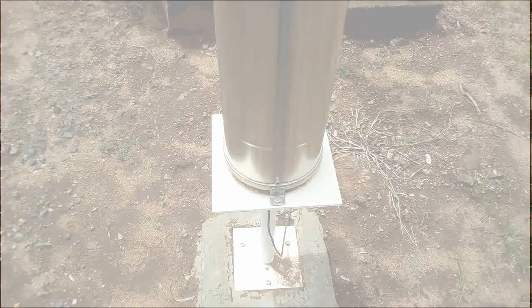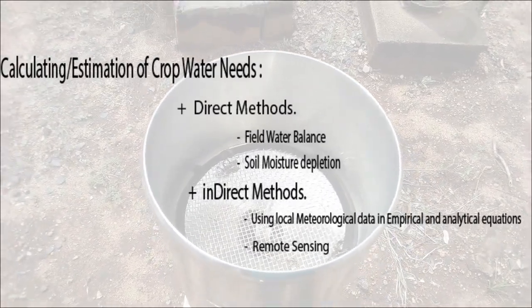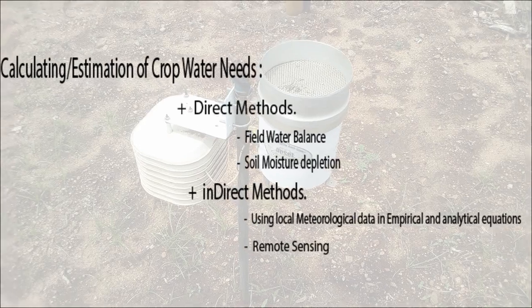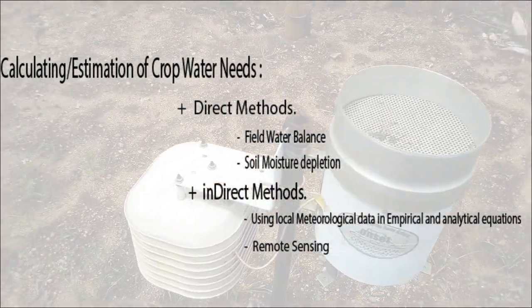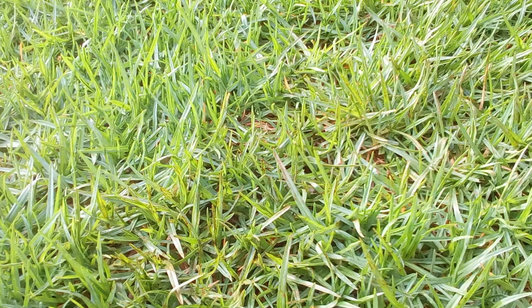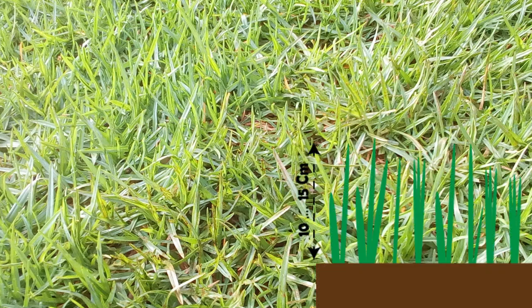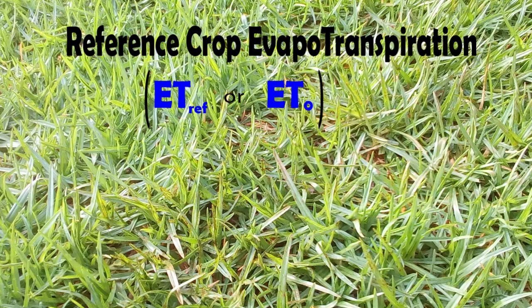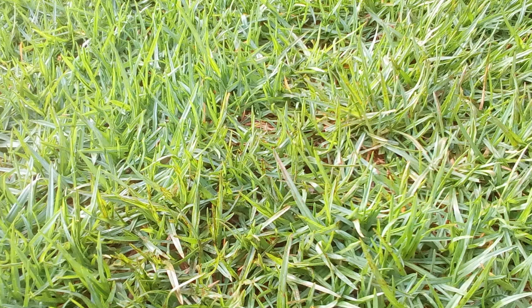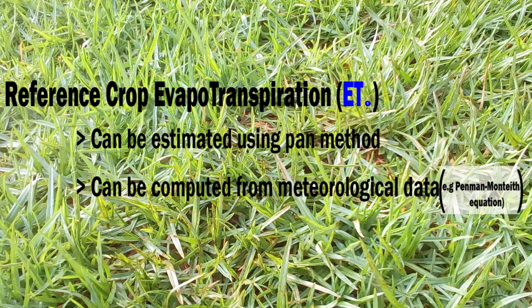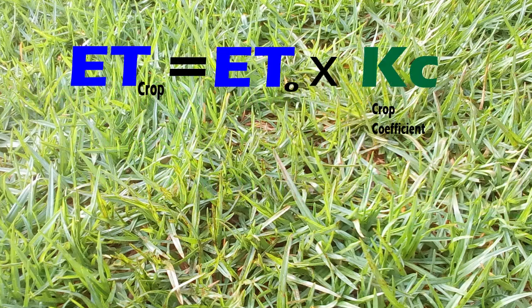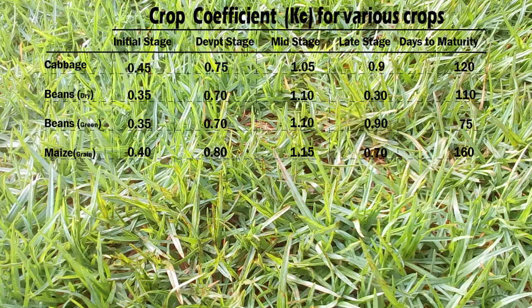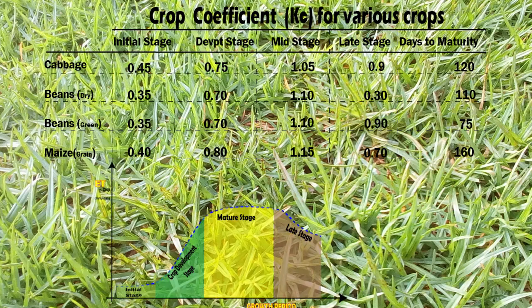There are various ways to estimate evapotranspiration — you can visit the FAO website for more information. Reference crop evapotranspiration (ET₀ or ET ref) is measured using grass planted over a large area, actively growing and not short of water, about 10 to 15 centimetres tall. To estimate evapotranspiration of another crop under similar conditions, you multiply the reference crop evapotranspiration by the crop coefficient (Kc) of that crop. Different crops have different Kc values that also change with growth stage.